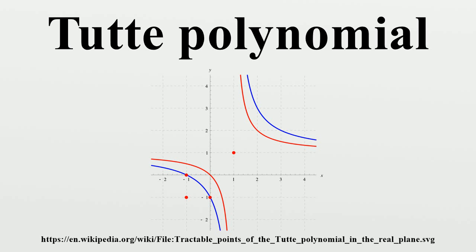The deletion-contraction recurrence for the Tutte polynomial immediately yields a recursive algorithm for computing it. Choose any such edge E and repeatedly apply the formula until all edges are either loops or bridges. The resulting base cases at the bottom of the evaluation are easy to compute. Within a polynomial factor, the running time T of this algorithm can be expressed in terms of the number of vertices n and the number of edges m. A recurrence relation that scales as the Fibonacci numbers gives a solution; the analysis can be improved to within a polynomial factor of the number of spanning trees of the input graph. For sparse graphs, this running time is O(2^m). In practice, graph isomorphism testing is used to avoid some recursive calls. This approach works well for graphs that are quite sparse and exhibit many symmetries.